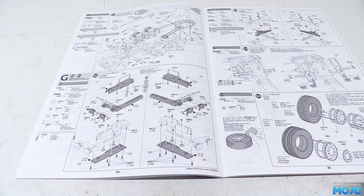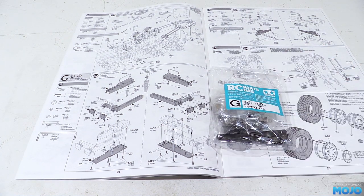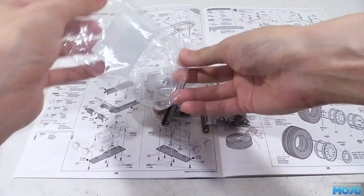Alright guys, welcome to RC Mojo. This week we're going to build up the outriggers for the Tamiya Wrecker, the wheels and tyres, and fit the electronics tray.